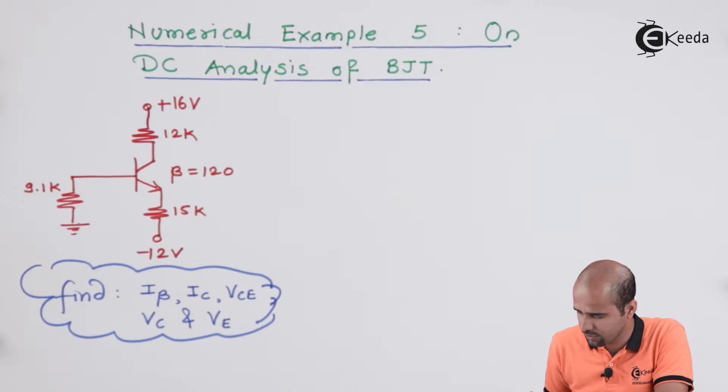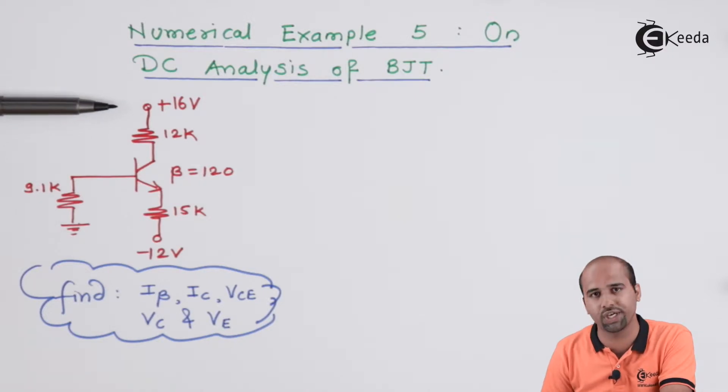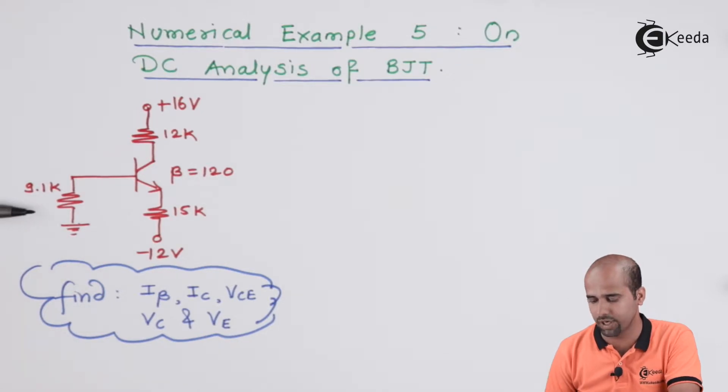What we will have to do? First of all, general method will apply your input KVL. Now, where that input is? Many people make mistake. They take input KVL from plus 16, 12k multiplied by IC and then they come 9.1k multiplied by IB and then go to emitter side. This is the wrong approach.